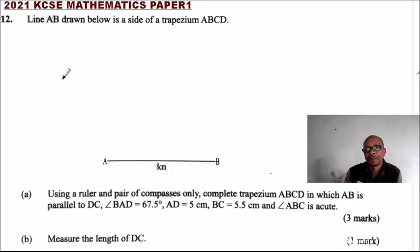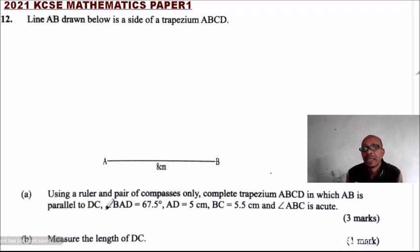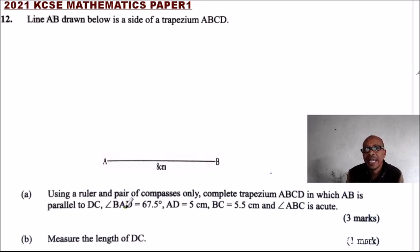This is question number 12. We are told line AB drawn below is a side of a trapezium ABCD. The line AB is 8 centimeters. Part A: using a ruler and a pair of compasses only, complete the trapezium ABCD in which AB is parallel to DC, and angle BAD is 67.5 degrees.